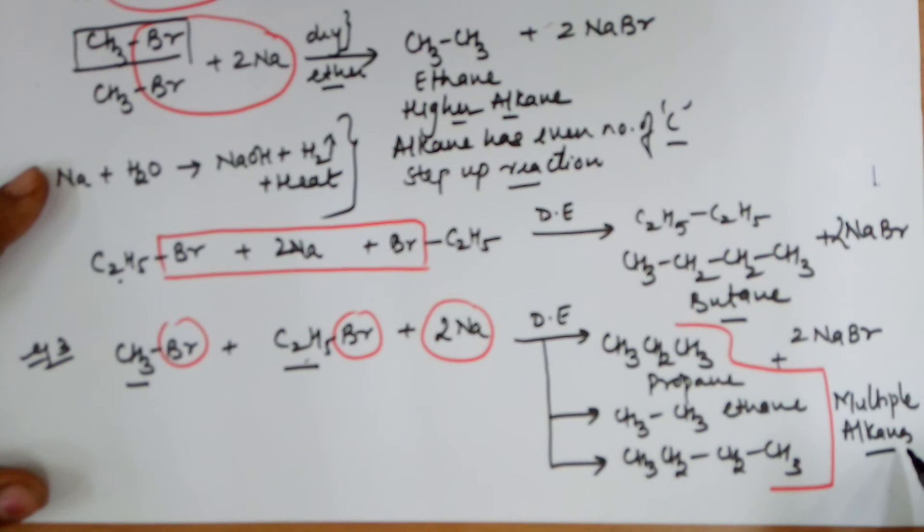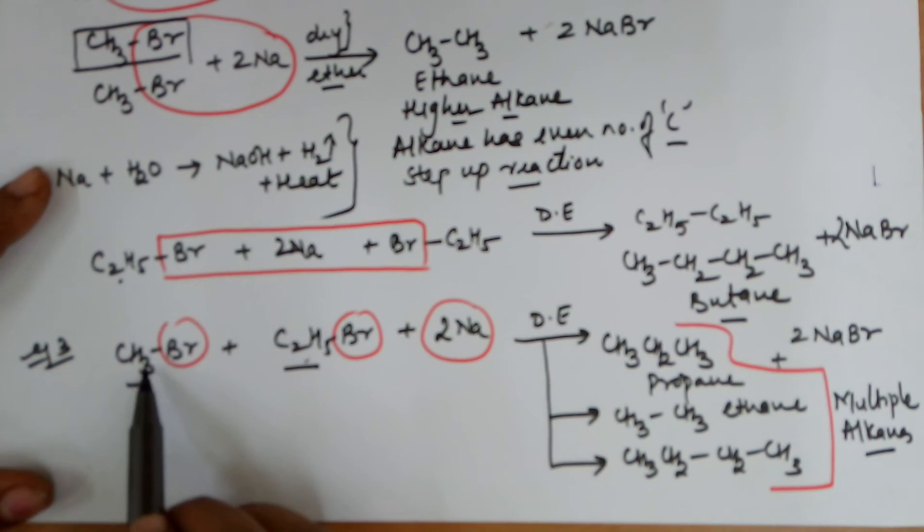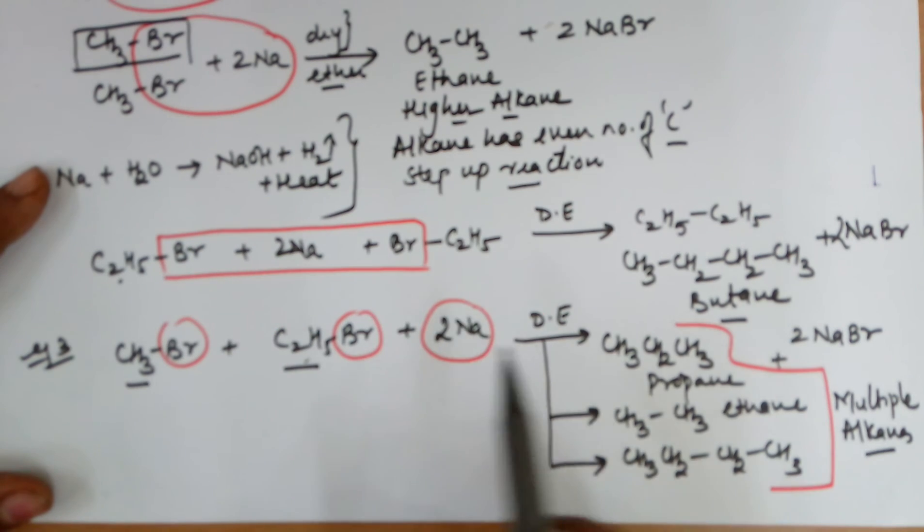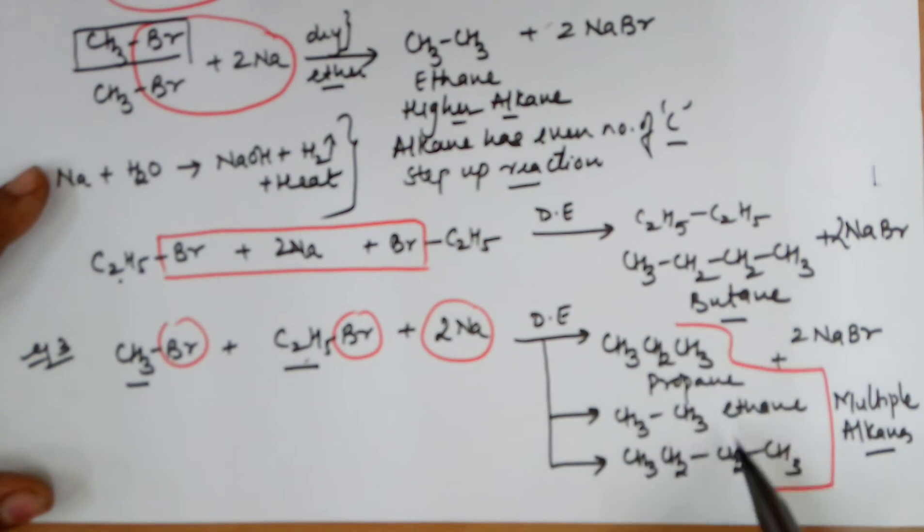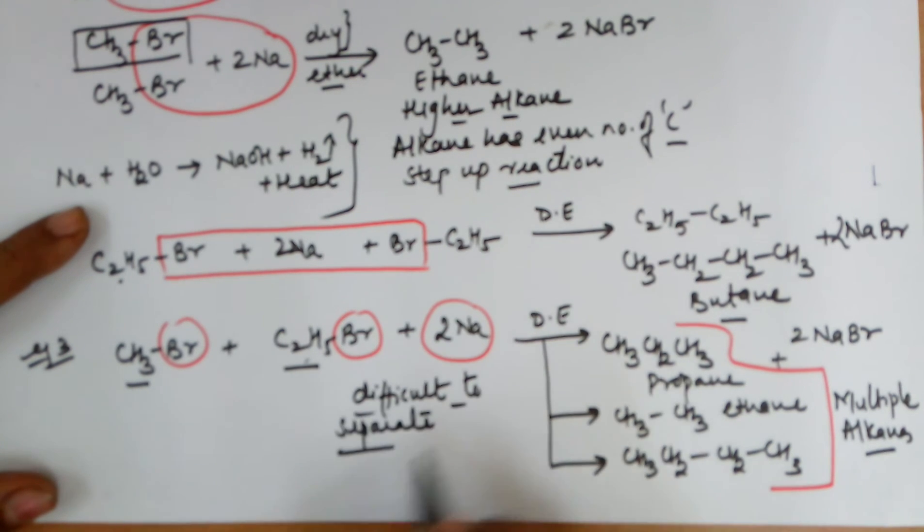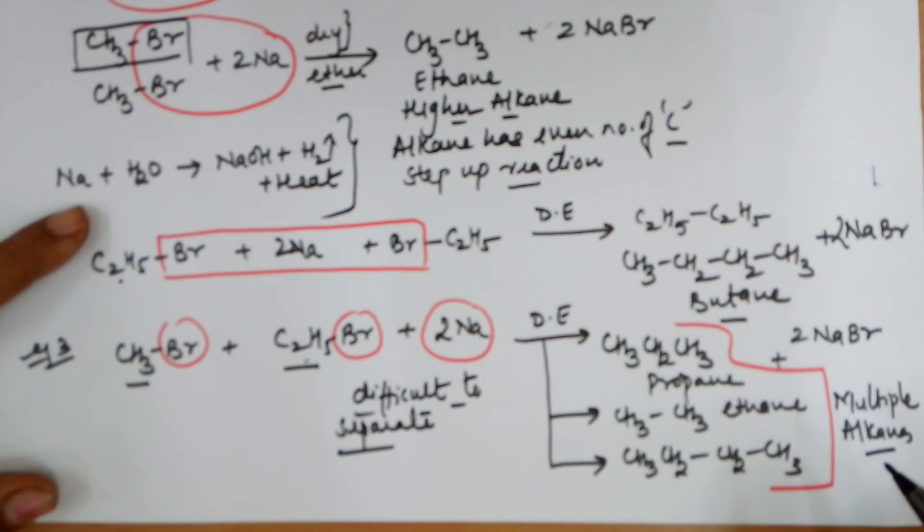These multiple alkanes would cause a problem as these multiple alkanes would be difficult to isolate. So the important thing is that we should not use two different types of alkyl halides with sodium. The products formed are multiple alkanes and there is a very small difference in their molecular masses, so their separation is also difficult. So since they are difficult to separate, hence this formation which happens should not be done. So this method is not used to prepare a hydrocarbon with odd number of carbons by using two different types of alkyl halides.